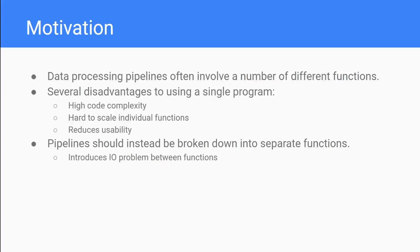Using a single program also reduces reusability - if you have a function you want to use somewhere else, and you've written it as an integrated part of a larger program, it can be harder to take that and apply it to a different pipeline. So instead, when developing data processing pipelines we should try to break them down into separate functions that are as decoupled from each other as possible. However this can introduce IO problems between the different functions - how do you get data from one function into another?